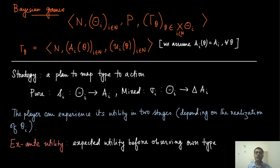In the previous module, we introduced the notion of Bayesian games and developed the basic notation. In this module, we are going to discuss the strategy and the utilities of the players in this game.